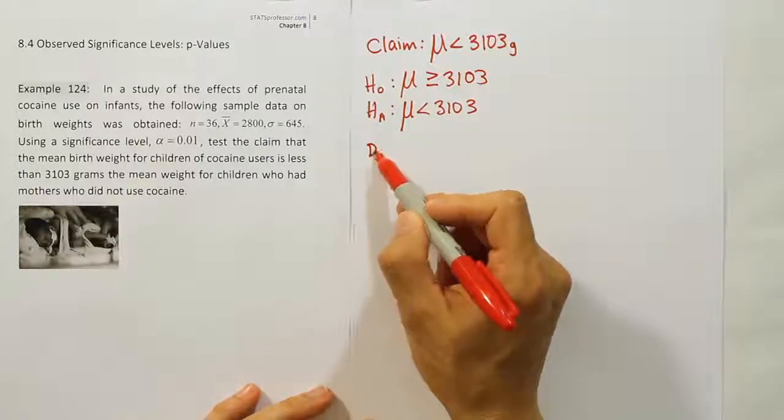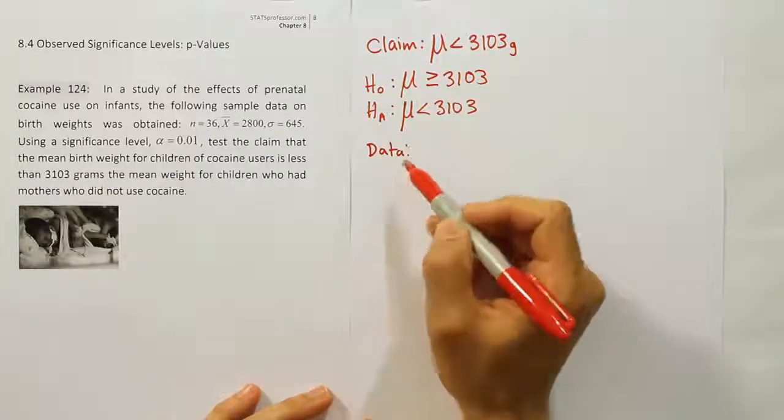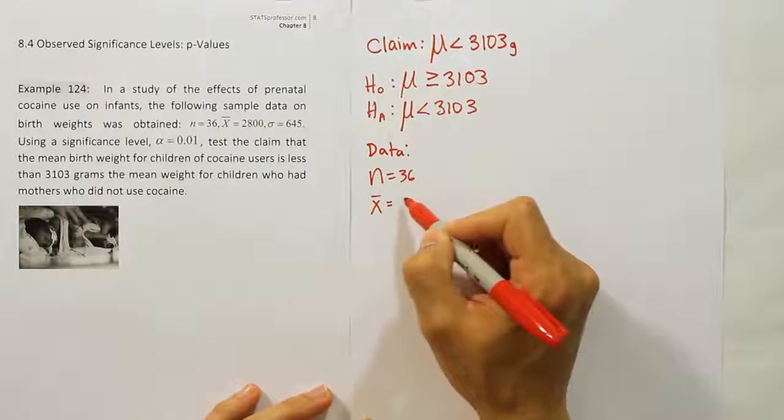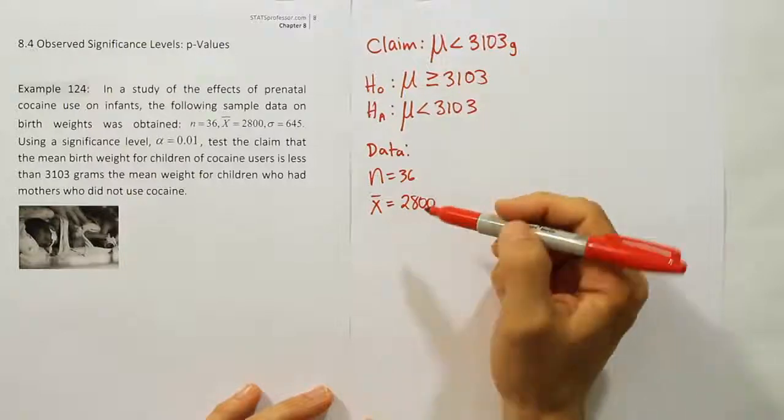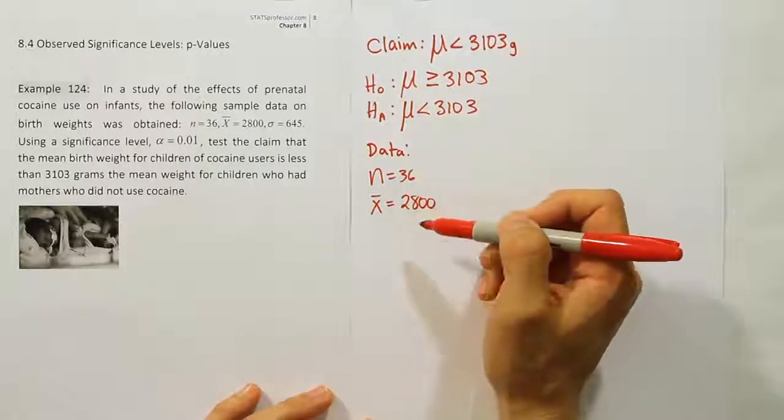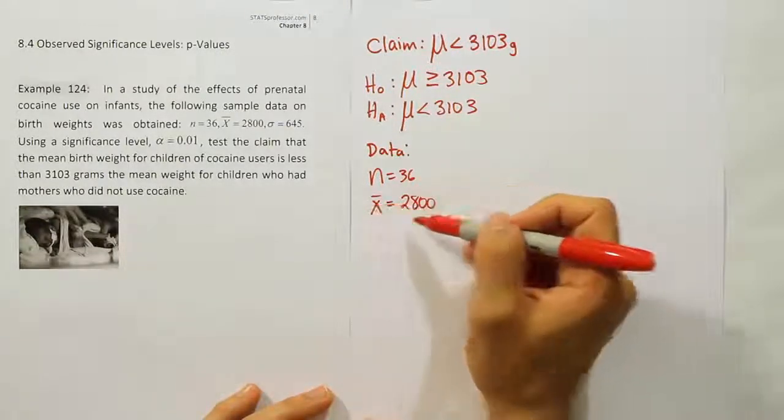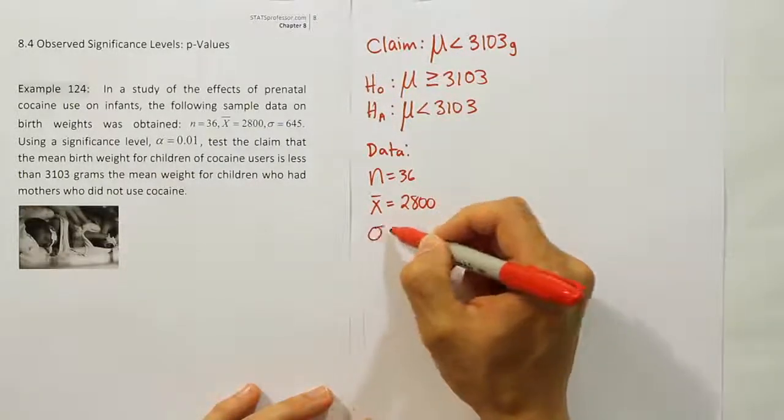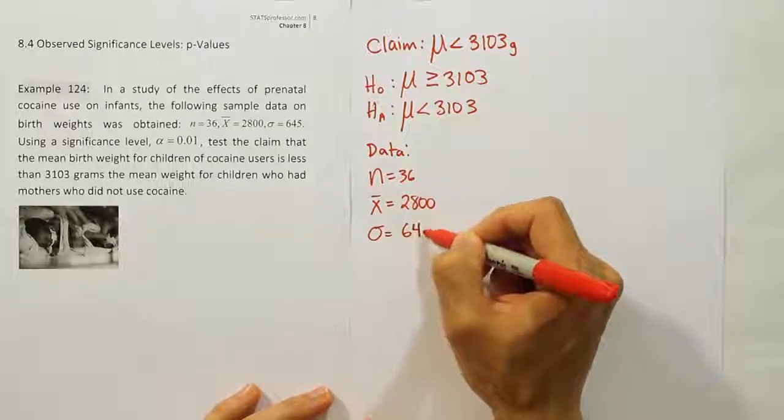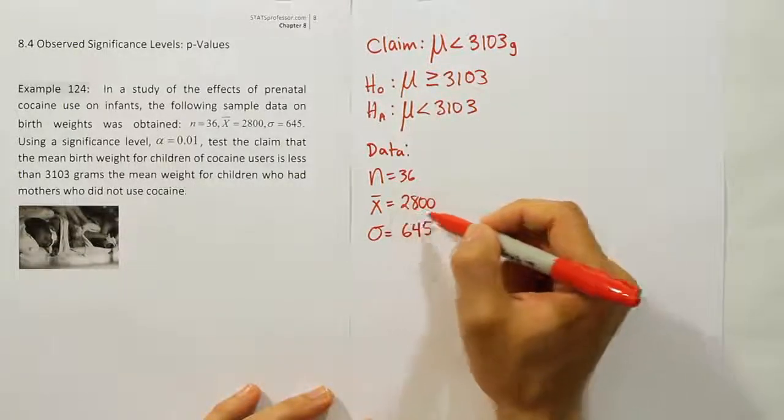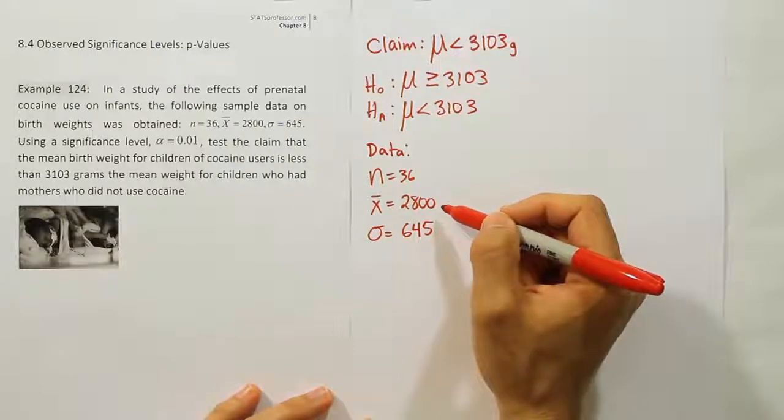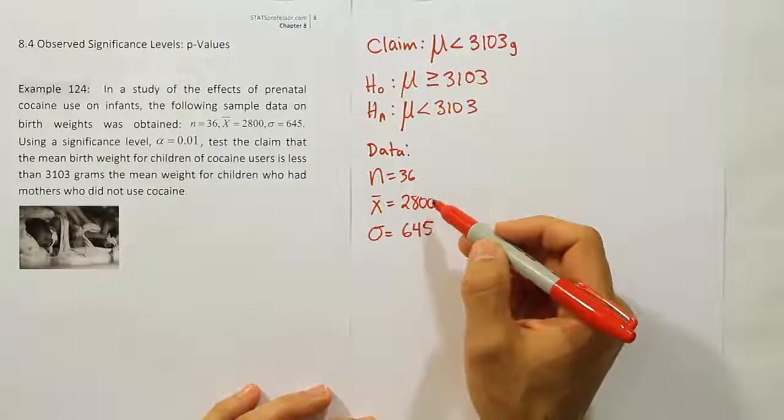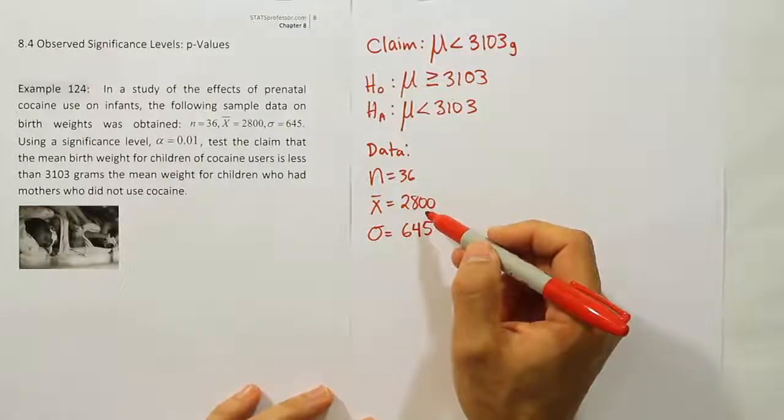From there we're going to collect our data. Our data is pretty clearly laid out in the problem. It says that n is 36, the sample mean is 2,800. By the way, normally most of these problems use real data. I had to change this number to make it a little heavier than it was actually for the cocaine babies. I changed it so that we could use our charts. Otherwise, the number for cocaine babies is so light it's actually off the charts.